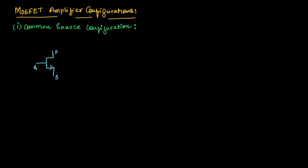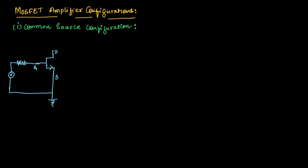From our previous discussion, we understood that in common source configuration, the source will be common between input and output, the gate terminal will be acting as the input side, and the drain terminal will be acting as the output side. So let us make the connection. The source terminal is connected to ground; at the gate terminal we need to connect the input. So let us take the resistor and connect the input, and at the drain terminal let us connect the resistor RD.